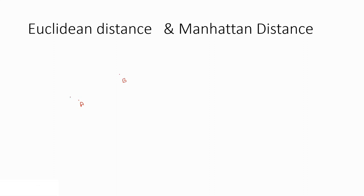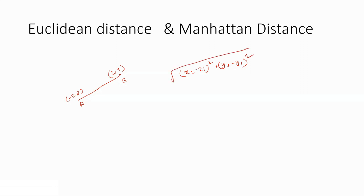Let's see a simple example using Euclidean distance with points (-3, 8) and (2, 4). The Euclidean distance formula calculates the distance between these two different points. We apply: square root of (x2 minus x1) squared plus (y2 minus y1) squared, where x1, y1 is (-3, 8) and x2, y2 is (2, 4).